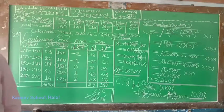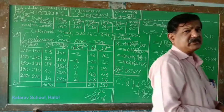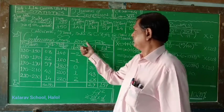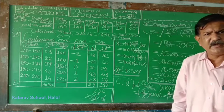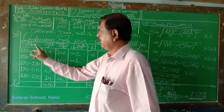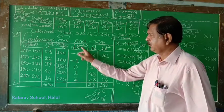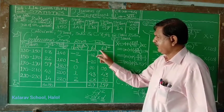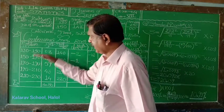We have to prepare the frequency distribution table. As this is the continuous type, we should write continuous frequency distribution table. Identify the type of the data. How to prepare the table? Delivery means classes, frequency, midpoint means grid value, d, f into d, f into d square.